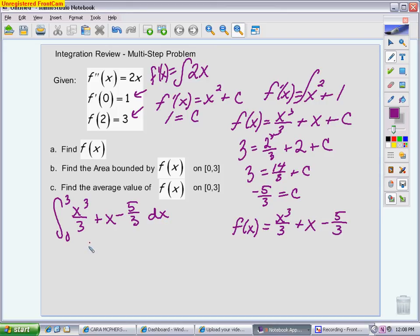So I'm going to integrate again. So I get x to the 4th over 12 plus x to the 2nd over 2 minus 5 thirds x. And I don't need a plus c for this, because I'm putting in numerical values right away. I'm getting a numerical answer.